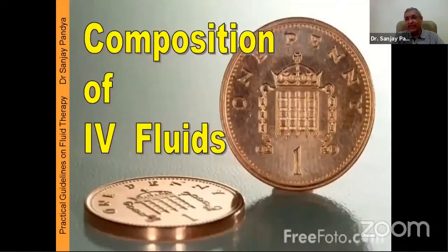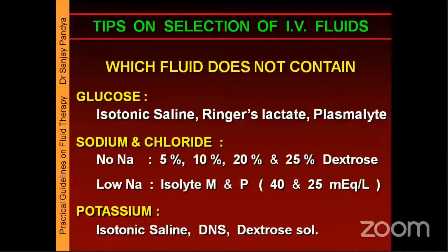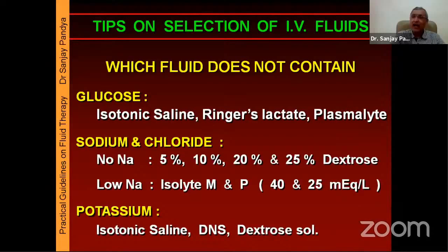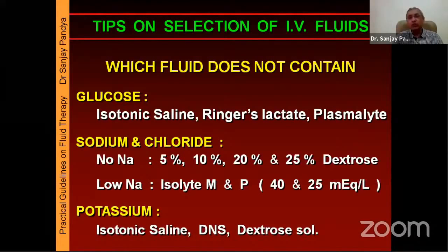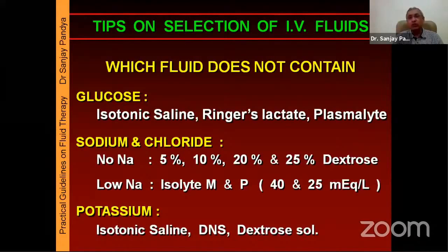When we look at IV fluid, we need to know not just what each fluid contains, but also what it does not contain. In patients where we don't want to give glucose or dextrose, the options available are saline, Ringer's lactate, and Isolyte. These fluids are free of glucose. When we don't want to give sodium, the only fluids available are dextrose-containing fluids like 5%, 10%, 20%, 25%, and all isolytes which are comparatively low in sodium. When it comes to potassium-free fluids, saline, all dextrose-containing fluids, and dextrose saline are potassium-free. These are the other aspects we need to look at while selecting IV fluid.